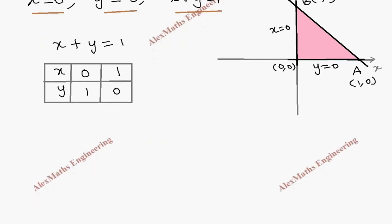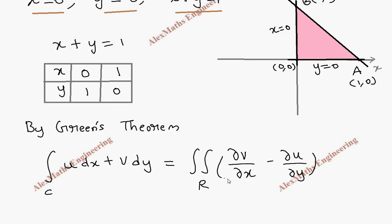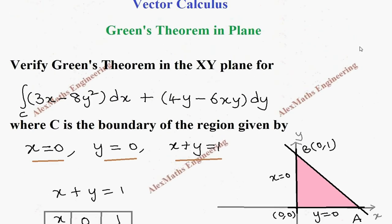Now let us write Green's theorem. By Green's theorem, we have the integral over the closed curve C of u dx plus v dy, equal to the double integral over the region R of (∂v/∂x minus ∂u/∂y) dx dy. From the question, by comparing u dx plus v dy, we can get the values of u and v.